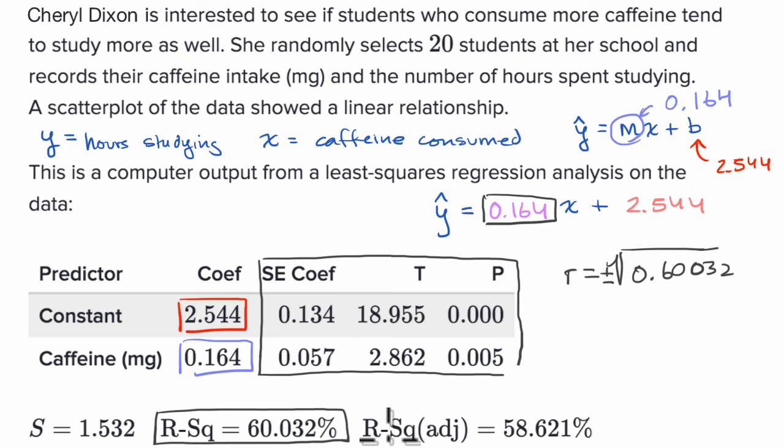Now this right here is the adjusted r squared. And we really don't have to worry about it too much when we're thinking about just bivariate data. We're talking about caffeine and hour studying in this case. If we started to have more variables that tried to explain the hour studying, then we would care about adjusted r squared, but we're not going to do that just yet.